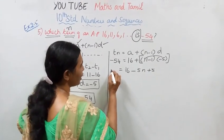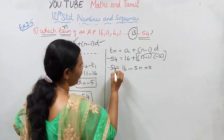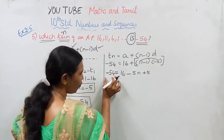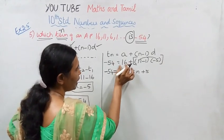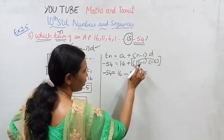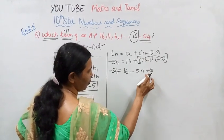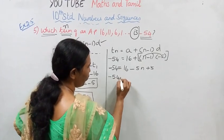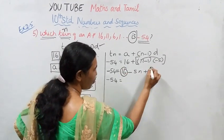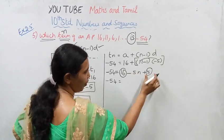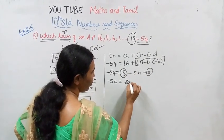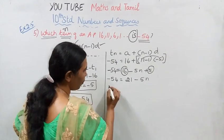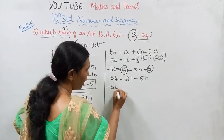Minus 54 equal to 16 minus 5N plus 5. 16 plus 5 is 21 minus 5N.